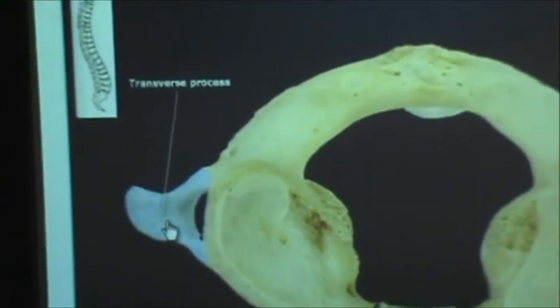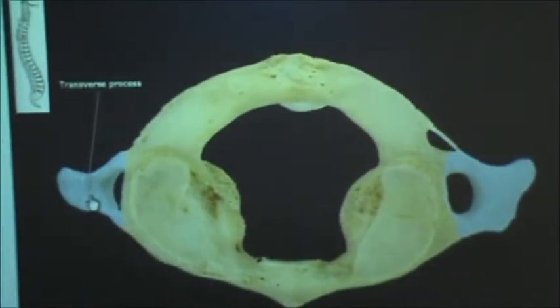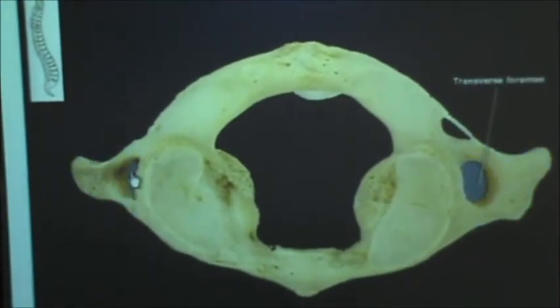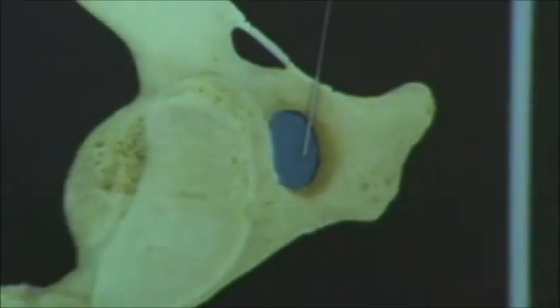Then we have the transverse process which you can see on both sides, and then the holes in the middle are the transverse foramen.